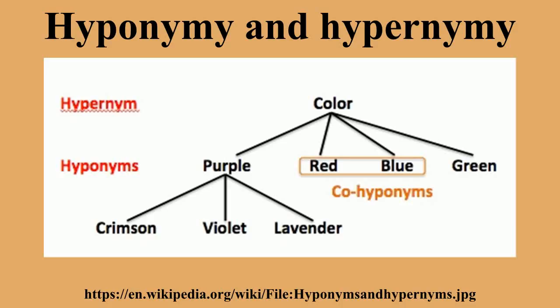The notion of hyponymy is particularly relevant to language translation, as hyponyms are very common across languages. For example, in Japanese, the word for older brother is 'ani' and the word for younger brother is 'ototo.' An English-to-Japanese translator presented with a phrase containing the English word 'brother' would have to choose which Japanese word equivalent to use. This would be difficult, because abstract information is often not available during machine translation.